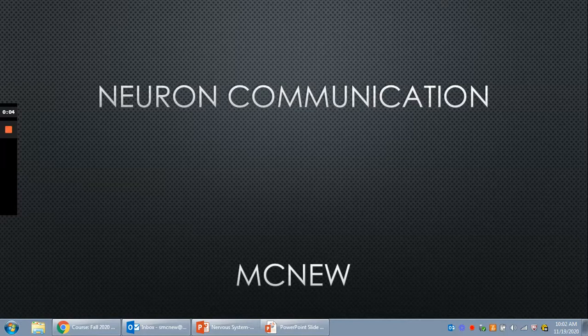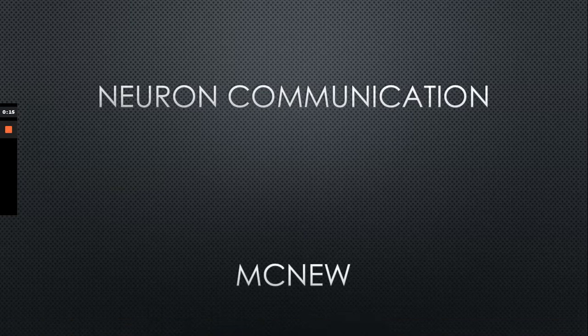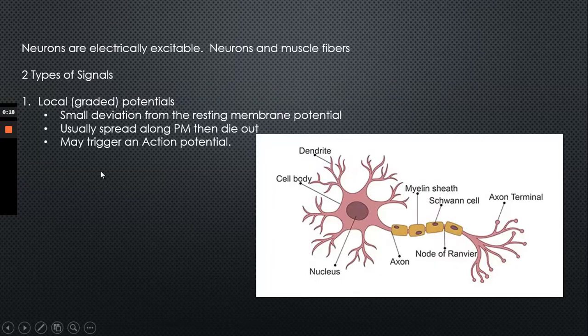This is the lecture on the nervous system. We're going to be talking about neuron communication. One thing to know about neurons is that they are electrically excitable, and it's not just neurons — neurons and muscle fibers are both electrically excitable.